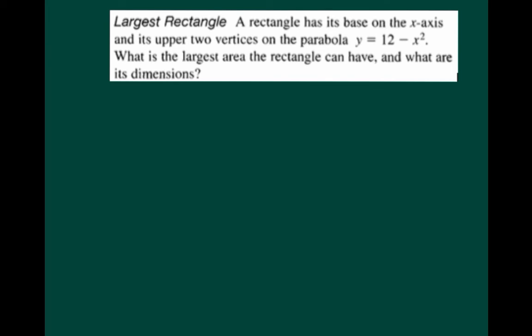So let's draw what's going on here. It tells us that a rectangle has its base on the x-axis and its upper two vertices on this parabola, y equals 12 minus x squared. Well, 12 minus x squared is going to be a parabola that's facing downward, whose axis of symmetry is the y-axis. And the base will stretch from one x-coordinate to the other. And there's our rectangle. So this is kind of a different example because our constraint is actually given to us. And what we're trying to maximize is the largest area that the rectangle can have.